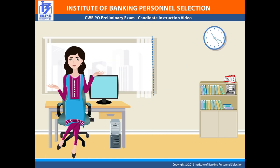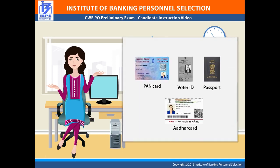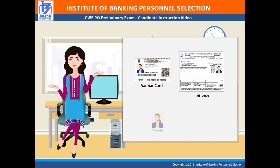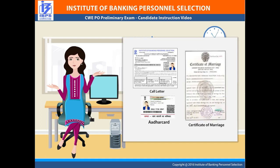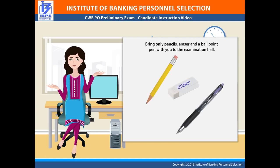The next important step is to go through the following document checklist: original ID proof as mentioned in the call letter, photographs, and the call letter. Prepare all mentioned documents one day before the exam so that you do not miss any vital document on the exam day. Note that a ration card will not be accepted as a valid ID proof. In situations of name change after marriage, you will have to produce an original gazette notification, a marriage certificate or an affidavit. Along with the documents, you will be permitted to bring only pencils, erasers and a ballpoint pen to the examination hall.